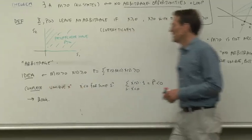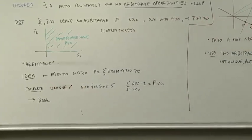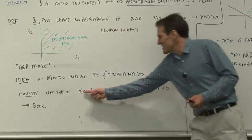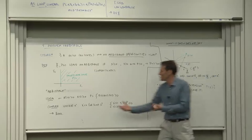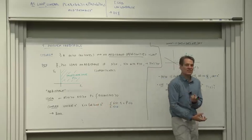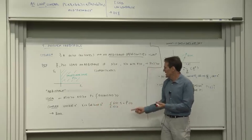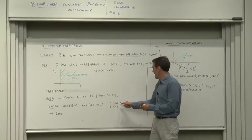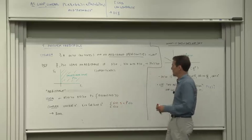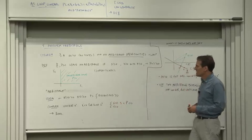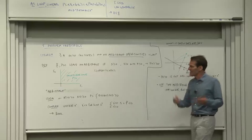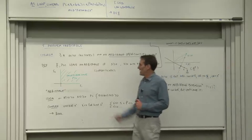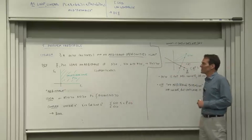In complete markets, the other direction of the theorem is easy as well. In complete markets, there's a unique discount factor. Suppose that discount factor was negative for some states of nature. Let's look at the contingent claims for those states of nature — those payoffs would have a negative price. The real proof I'm going to defer to the book, because it takes a while and uses techniques that aren't particularly useful anywhere else. But the theorem is true, and the important part is to remember the intuition.